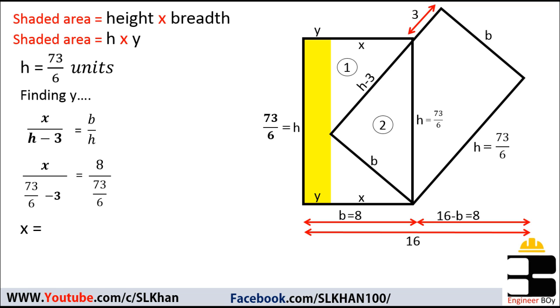So by doing a little math, x must be 144/73. That means the breadth of that shaded area must be now 8, which is the breadth of that vertical rectangle, minus this x. So that yellow rectangle is now 1.973 units wide.